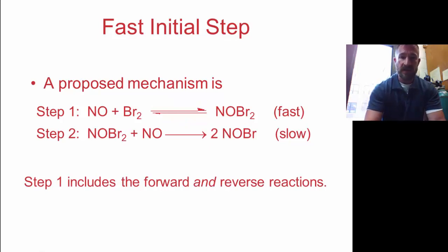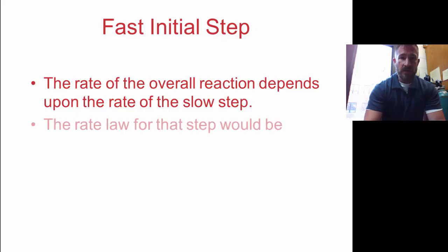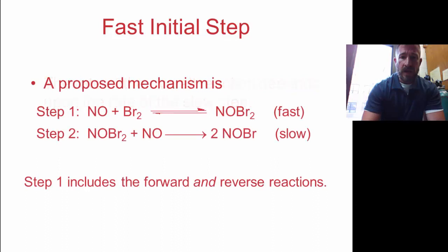Now remember we can write a rate law from the slow step. And if we do that, the rate law from the slow step would be rate equals K₂ times the concentration of NOBr₂ times NO. Now the problem with this is if you go back to our reaction, NOBr₂ is an intermediate. Intermediates cannot appear in the final rate law. So you can't have an intermediate in your rate law. So you've got to figure out a way to get rid of this intermediate.